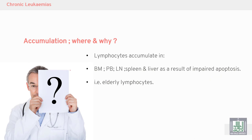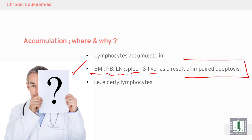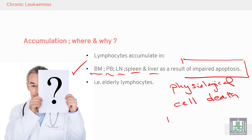The malignant lymphocytes accumulate in the bone marrow, blood, lymph nodes, spleen, and liver due to impaired apoptosis. Apoptosis is programmed cell death — a normal physiological condition. When apoptosis is impaired, a large number of lymphocytes accumulate in the peripheral blood, bone marrow, and other organs.